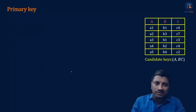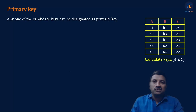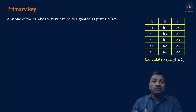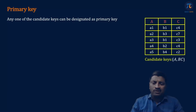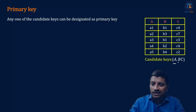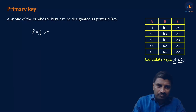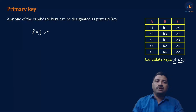The next one is primary key. Any one of the candidate keys can be designated as a primary key. The selection of primary key completely depends on us. When we have more than one candidate key, we can select any one of them as a primary key. For example, in this relation we have two candidate keys — one is A and the second one is {B, C}. We can designate A as the primary key.